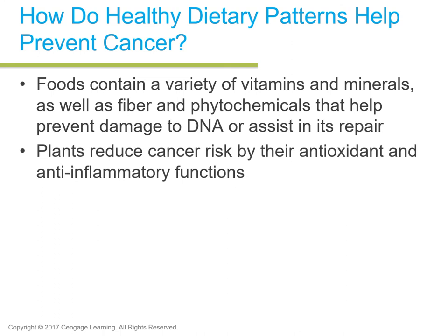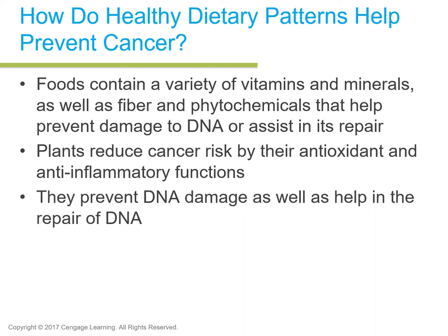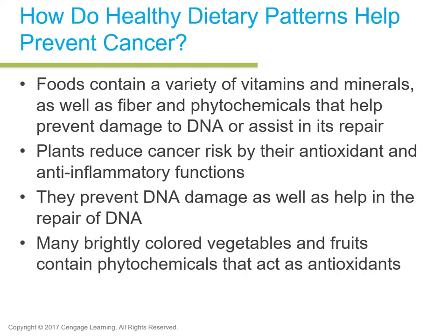Plants reduce cancer risk through their antioxidant and anti-inflammatory functions. They prevent DNA damage and help in its repair. Many brightly colored vegetables and fruits contain phytochemicals that act as antioxidants. Phytochemicals are called antioxidants because they work against oxidative stress — the phytochemical lecture covers this process in detail, so make sure you view it.